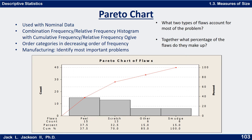Now the next thing I want to talk about is a Pareto chart. A Pareto chart is used for nominal data. Remember that nominal data has no inherent order — it's used for just nominal or categorical data, categories only.